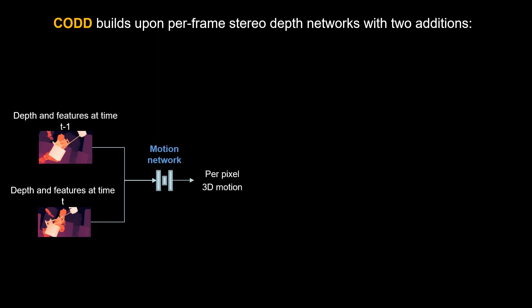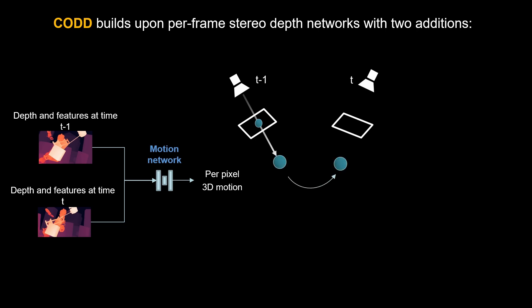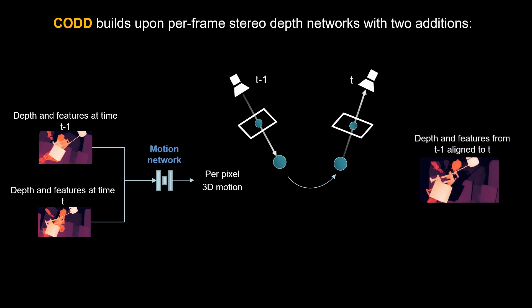Therefore, we can back-project the observations from the previous time point, use the 3D motion to align the past observation to the current time point, and project it to generate the aligned estimate.